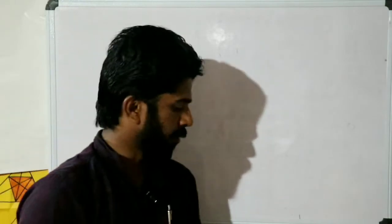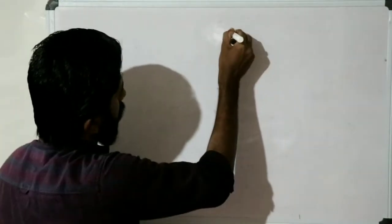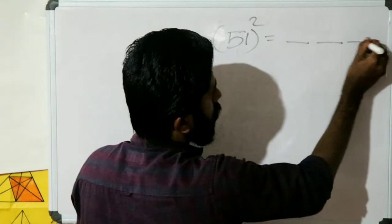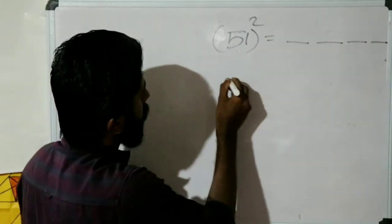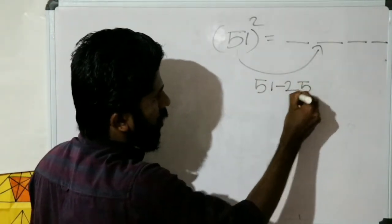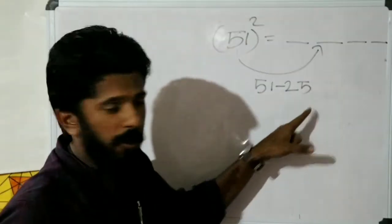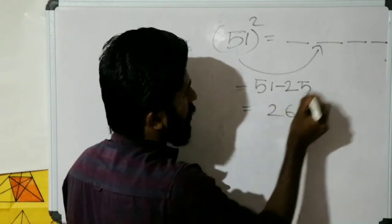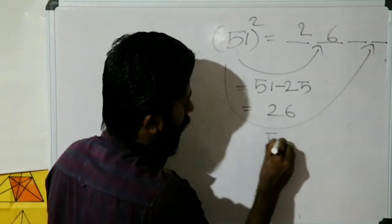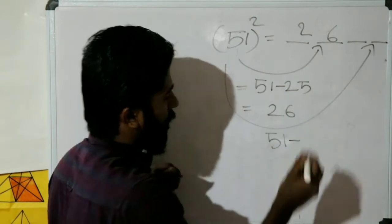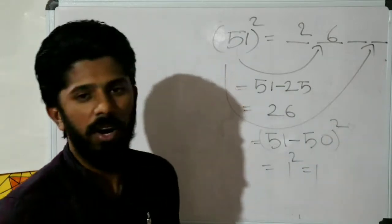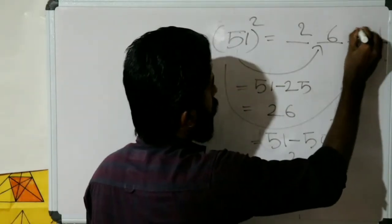OK, for example: 51 whole square. Let me see — 51. First, N minus 25: 51 minus 25 equals 26. Then N minus 50: 51 minus 50 equals 1. 1 whole square is 1.